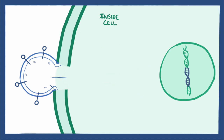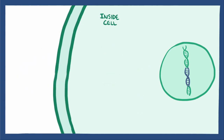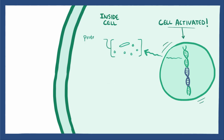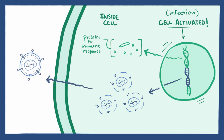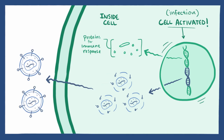When immune cells become activated, they start transcribing and translating proteins needed for the immune response. Ironically, this means that whenever immune cells are exposed to something that triggers an immune response — like any infection — the immune cell inadvertently transcribes and translates new HIV viruses, which bud off from the cell membrane to infect more cells.